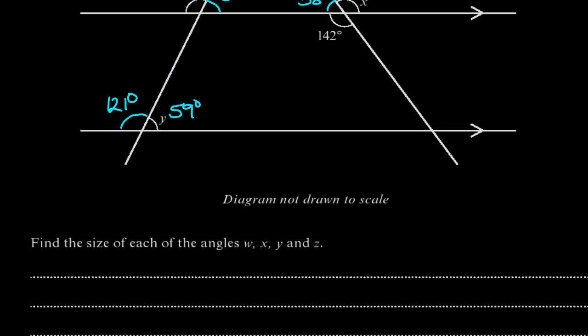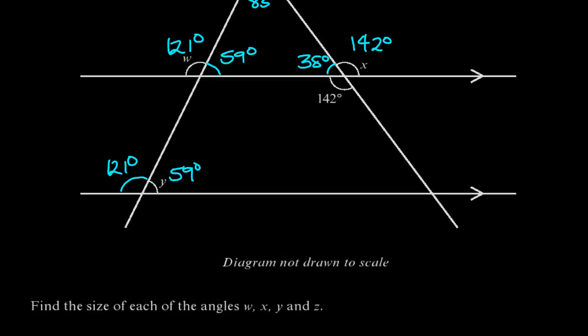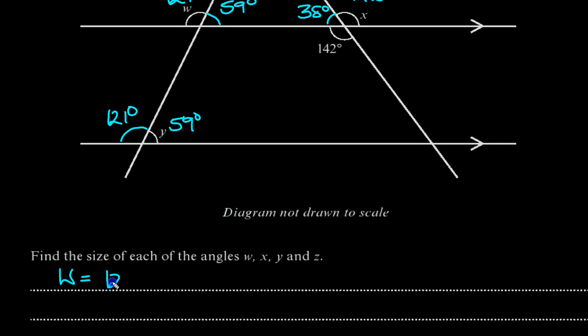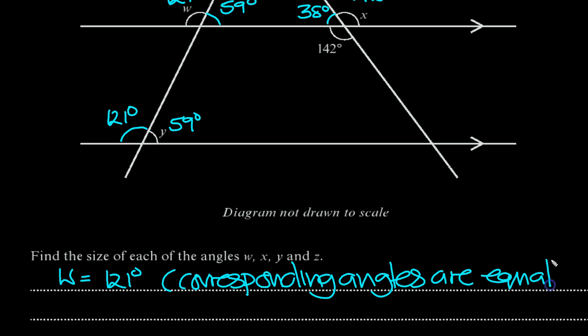So we can put that down in the section now. We've filled it in. So W was 121, and that was because this is the corresponding angle here. These angles are equal. So W was equal to 121 degrees, corresponding angles are equal.